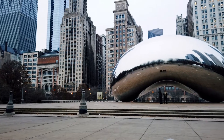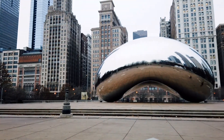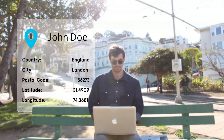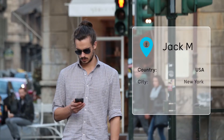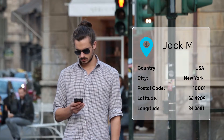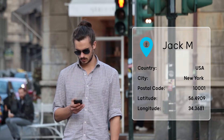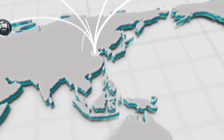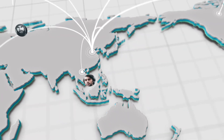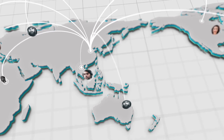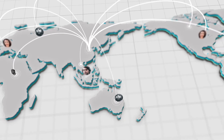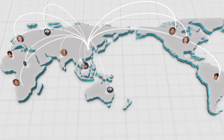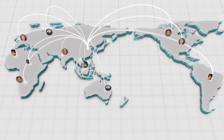Shufti Pro customers can now get free geolocation information for each user performing the verification. The geolocation feature offers better insight to businesses about their clients' location and from where they are receiving their customer traffic.